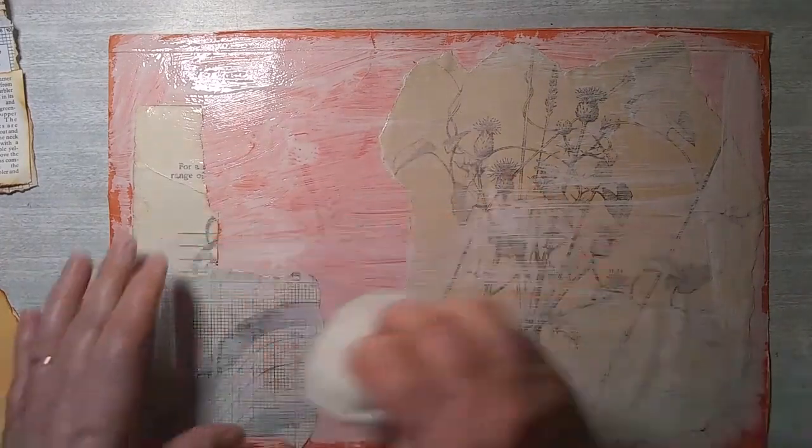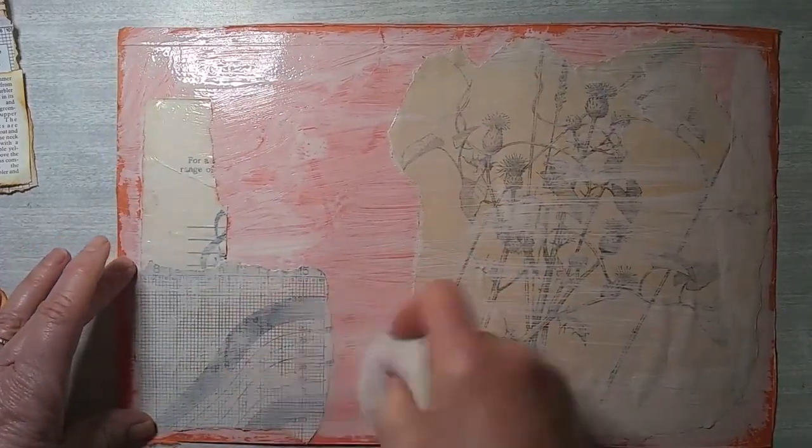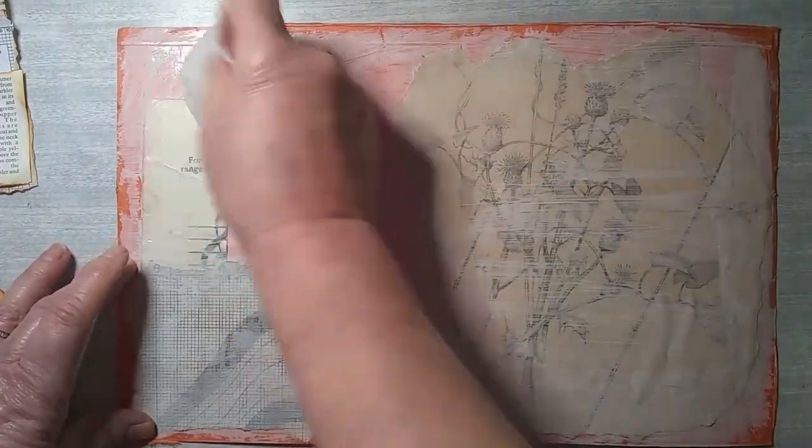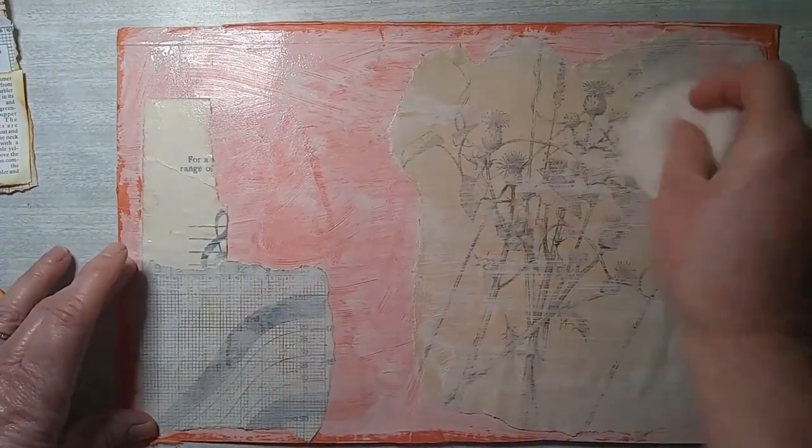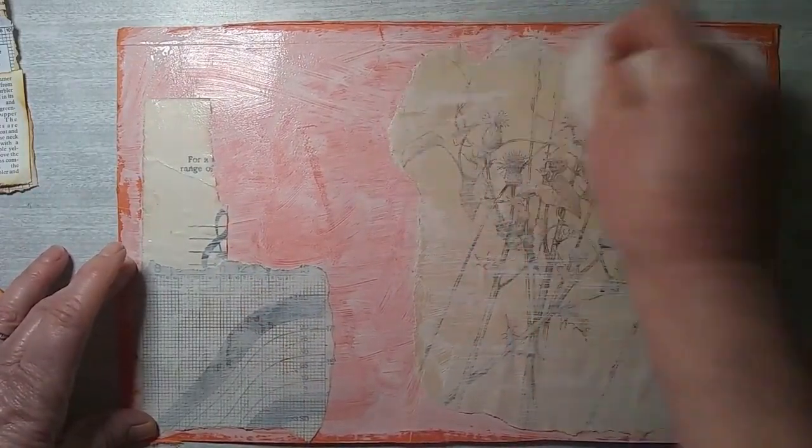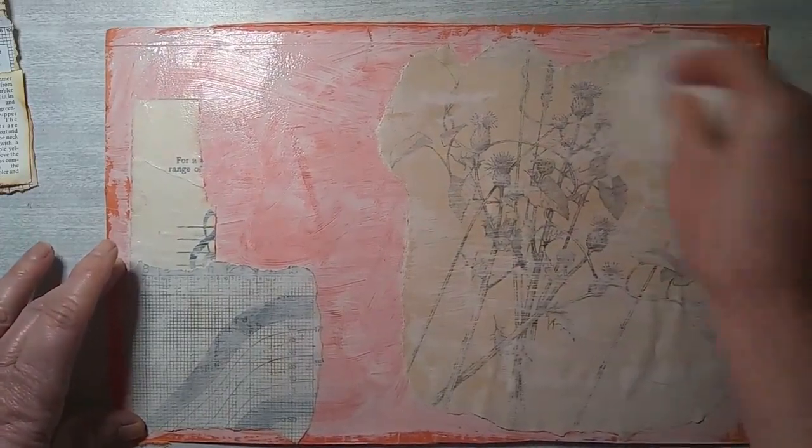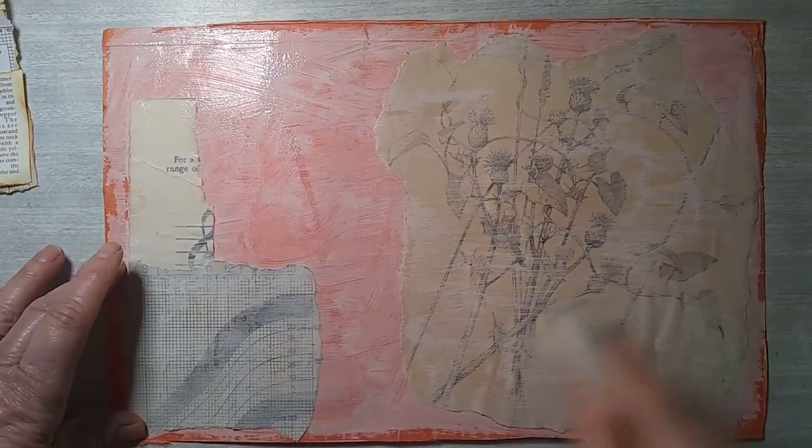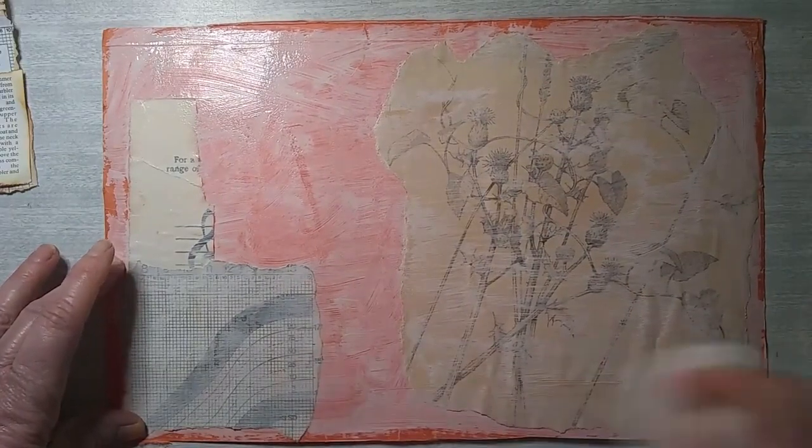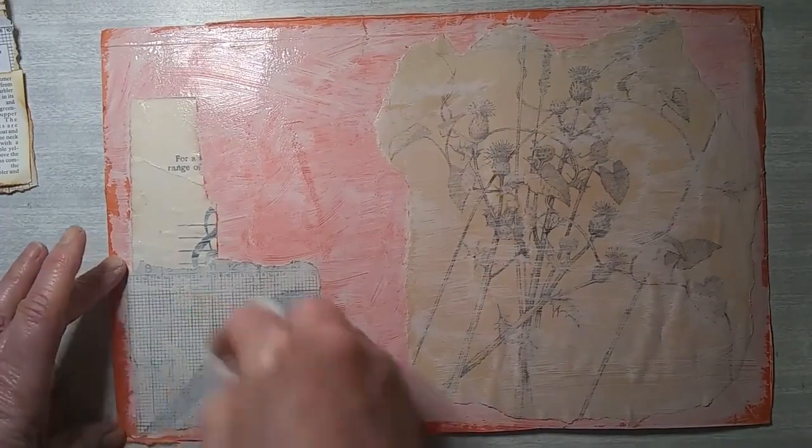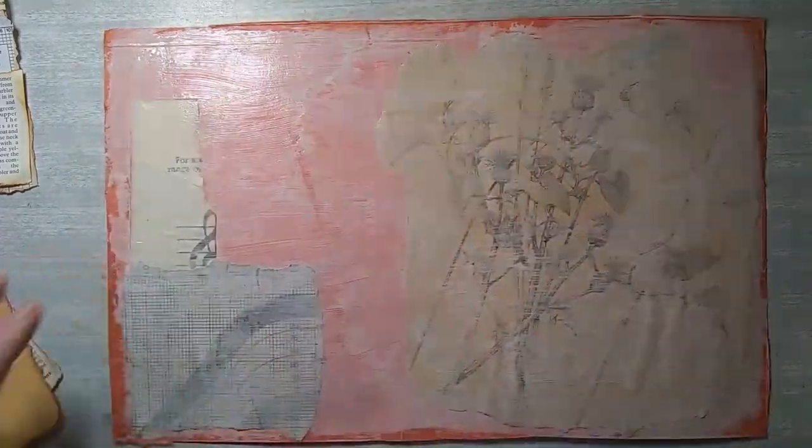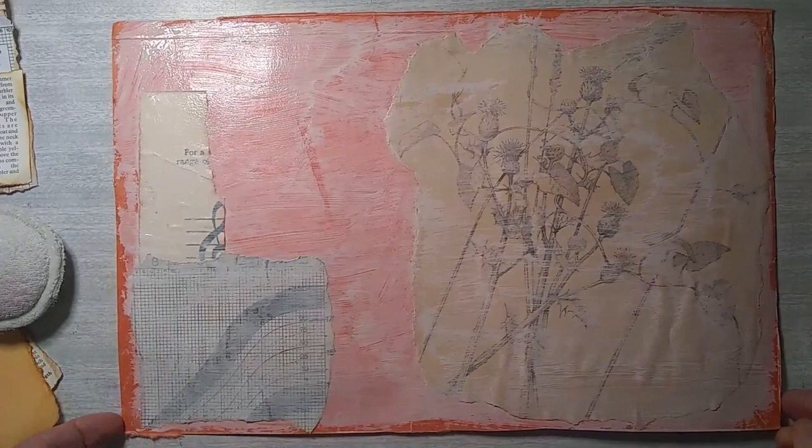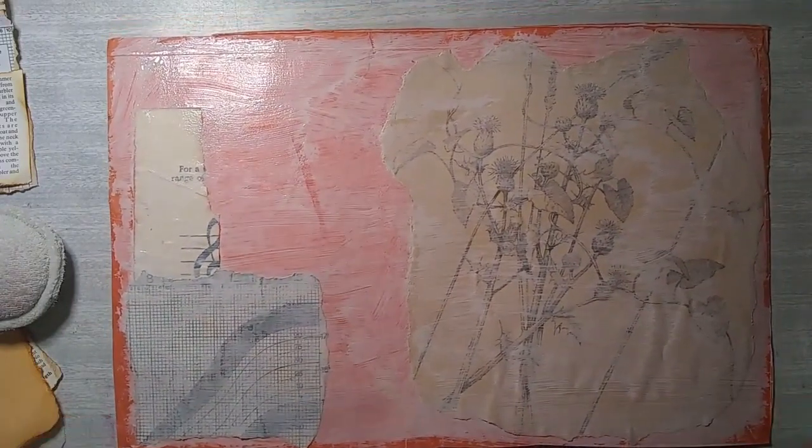I'm just going to get my sponge now just to move that around a bit. These are just old makeup remover sponges, but they add a bit of mark making as well, just to pull out some of those areas so that they're not totally obscured. Okay, well I'm going to let that dry a little bit. I might put another layer on it. I'll see how it looks when it's dried and then I'll be back.